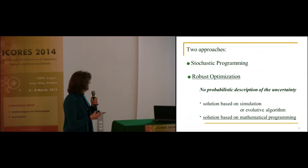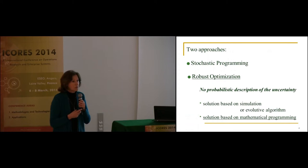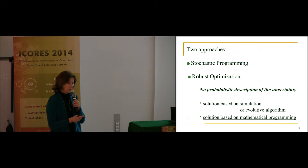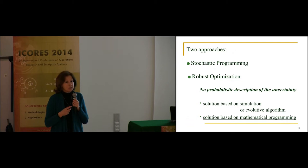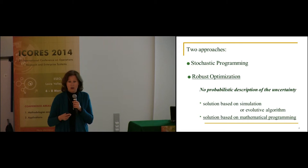What are the main differences between the two approaches? In stochastic programming, you assume that you have a known probabilistic description of the uncertainty. In robust optimization, we relax this assumption. The second main difference is that in stochastic programming you optimize the expected value of the objective function, while in robust optimization you seek a guarantee against the worst case — that is, the worst value of the data which can happen.